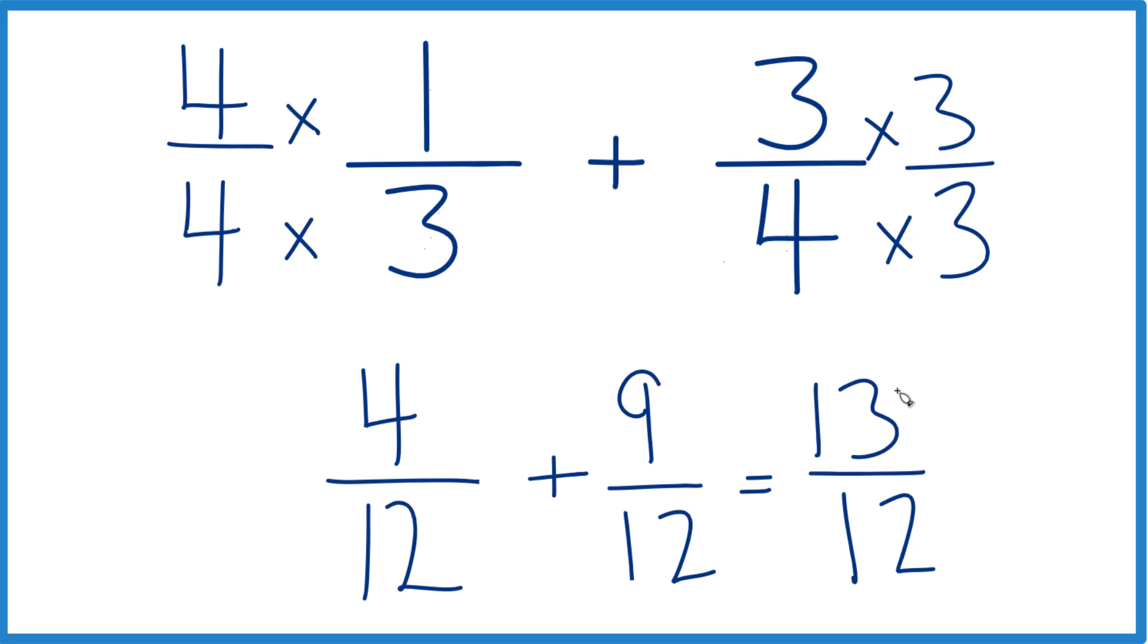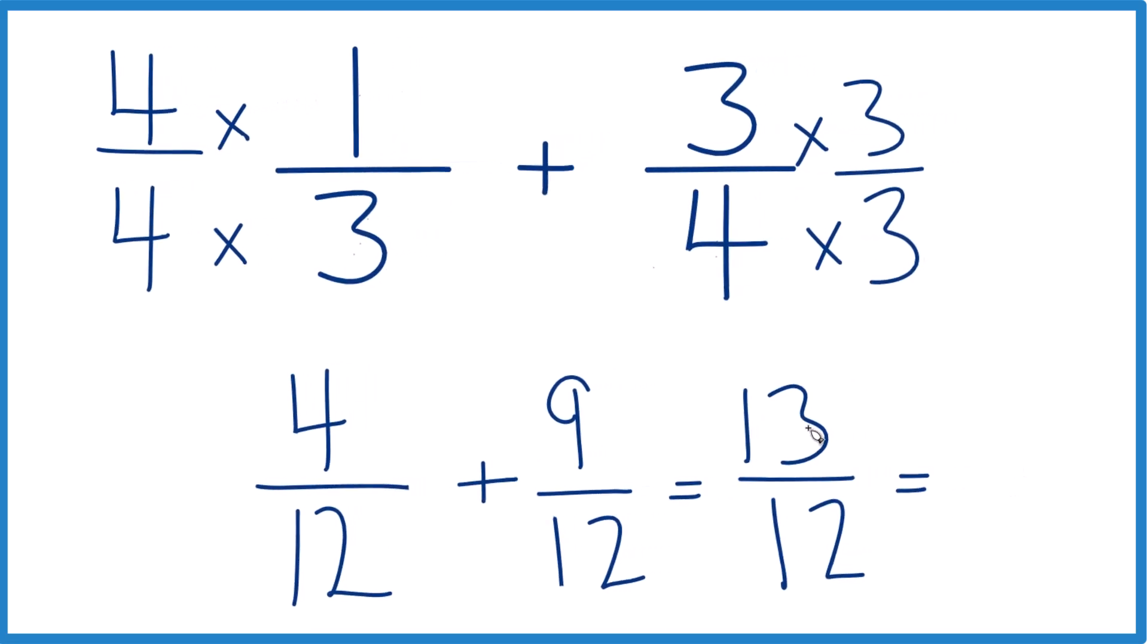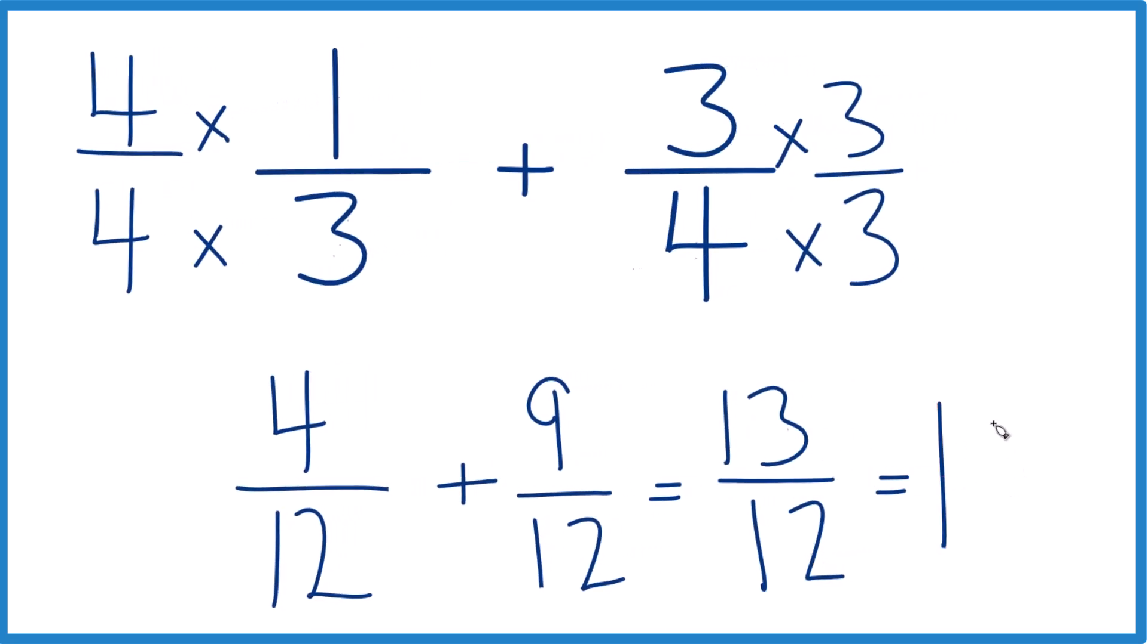Now this is an improper fraction because the numerator is larger than the denominator. We can change it to a mixed number. 12 goes into 13 one time. 1 times 12, that's 12, and we have 1 left over, so we keep the 12 here, and that's our mixed fraction.